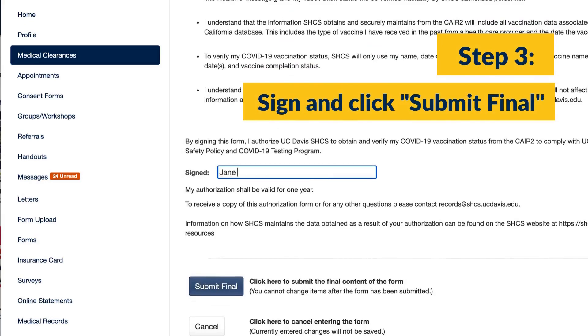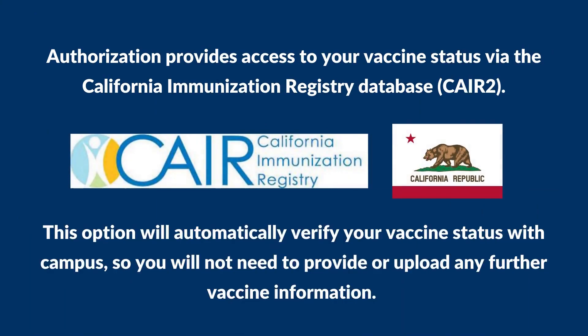Step three, sign and click submit final. Authorization provides access to your vaccine status via the California Immunization Registry Database, CAIR2. This option will automatically verify your vaccine status with CAMPBIS, so you will not need to provide or upload any further vaccine information.